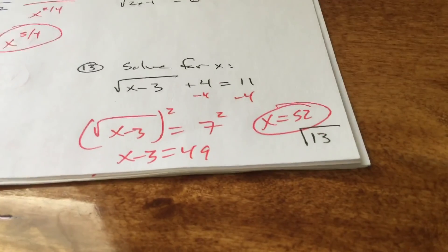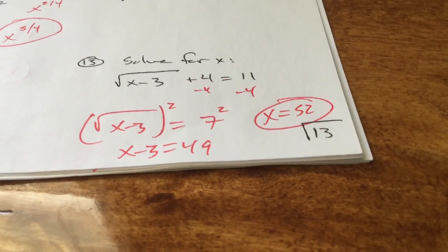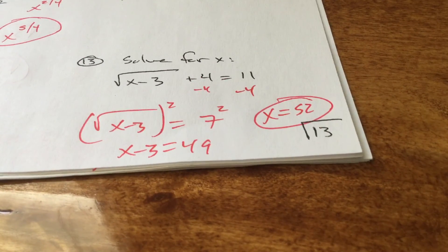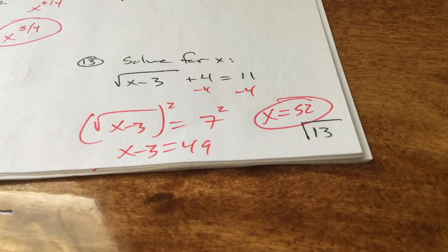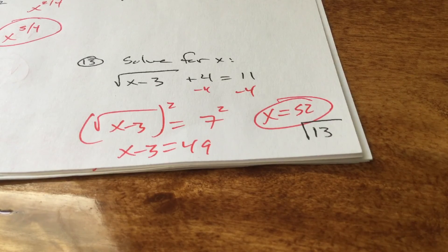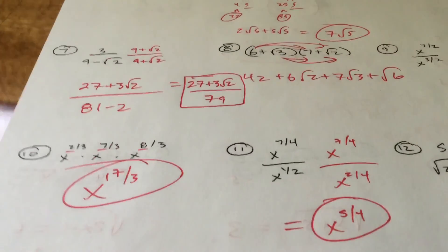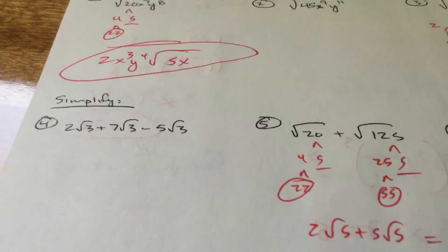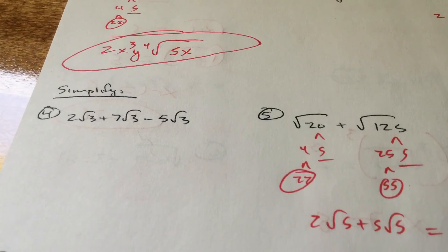And lastly, number 13 on page 13: subtract 4 from both sides, square both sides, you get 52. A nice long video for your last game plan of chapter 6. This is Yak Math Videos, signing out.